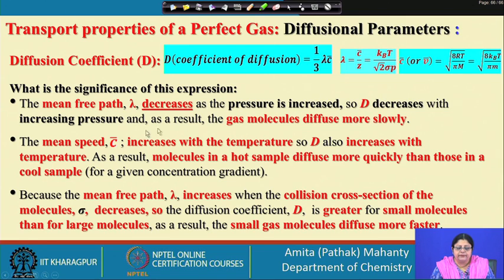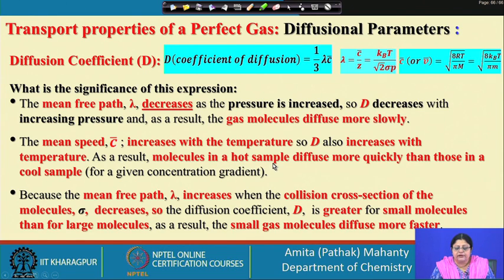What about the mean speed? It is directly proportional to the diffusion coefficient, and we know it is directly proportional to the square root of temperature. So if you increase temperature, c increases, and if c increases, the coefficient of diffusion increases. With increasing temperature, D increases — as a result, molecules in hot samples diffuse much more quickly than those in cold ones, giving a much faster diffusion for a given concentration gradient.